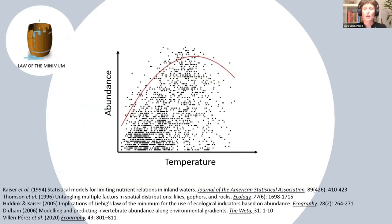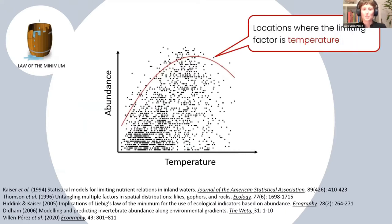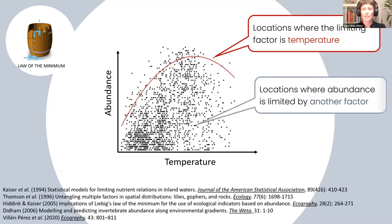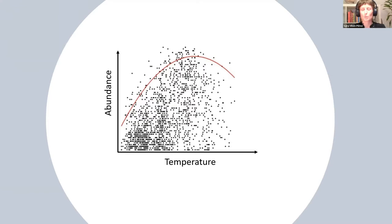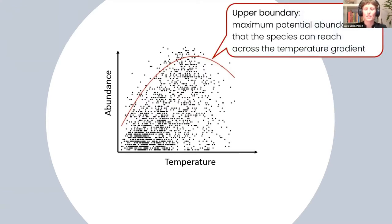How does this relate to the polygonal pattern? The prediction is that locations in the upper boundary will be locations where the limiting factor is what we are actually representing in our plot, in this case temperature. Locations below this upper limit will be locations whose abundance is limited by other limiting factors. The interesting point is the upper boundary, which represents the maximum potential abundance that the species could reach across the environmental gradient we are measuring.